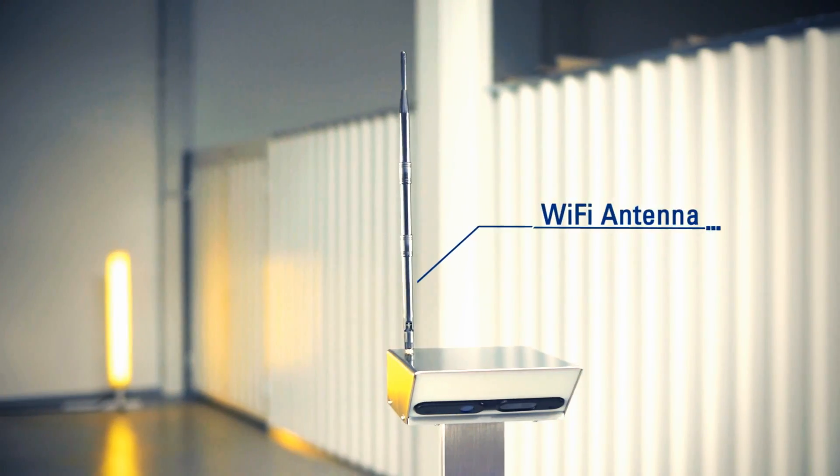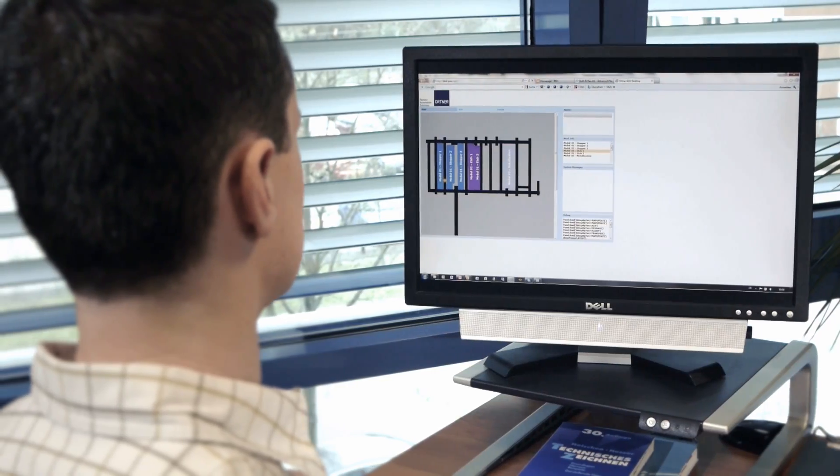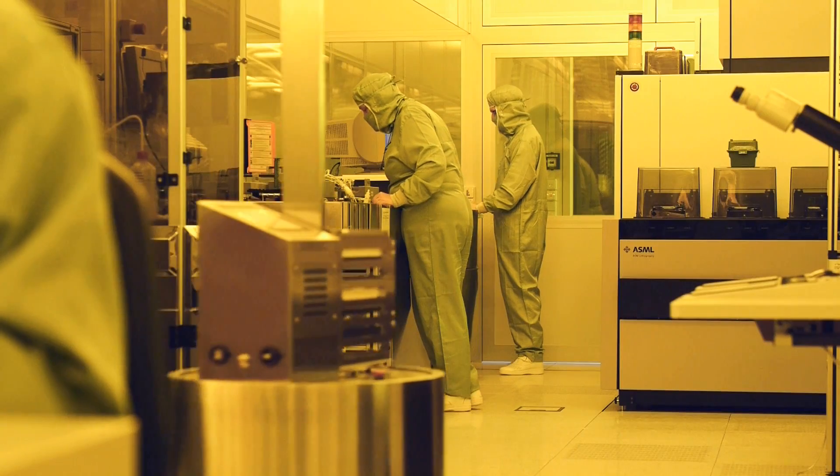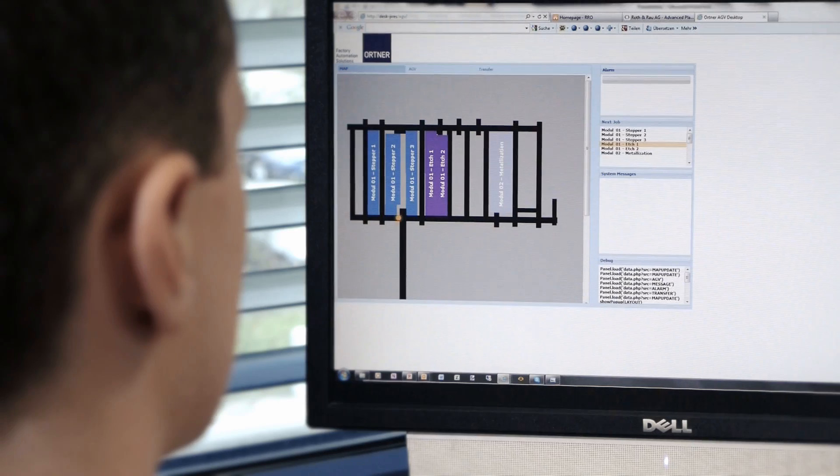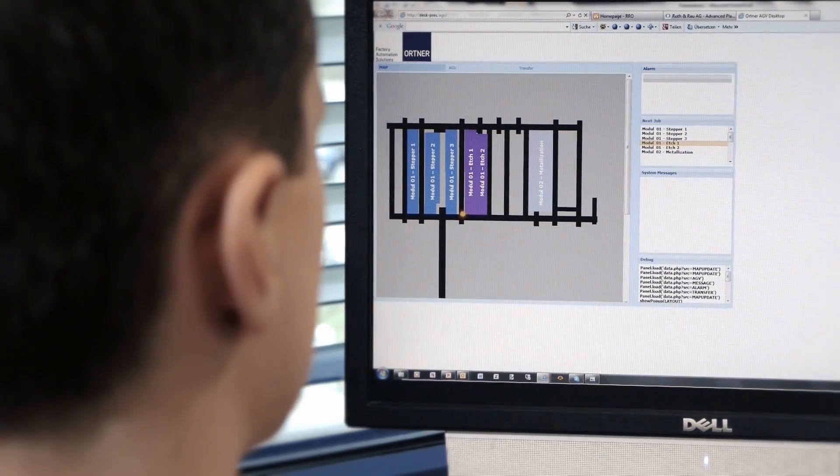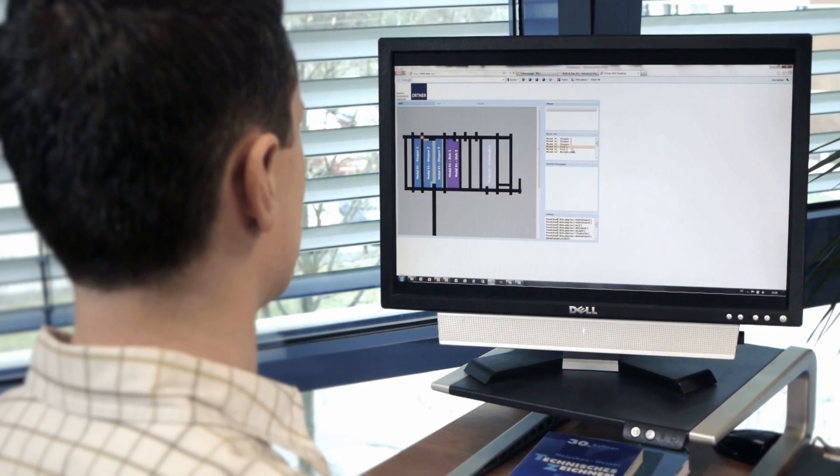Scout can communicate via Wi-Fi, which is not necessary for the actual navigation, but helps to track important status information, for instance the current position inside the fab, on a web-based graphical user interface. It is also possible to issue new transport jobs to Scout remotely, even from your desk.